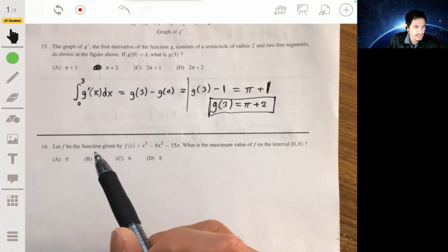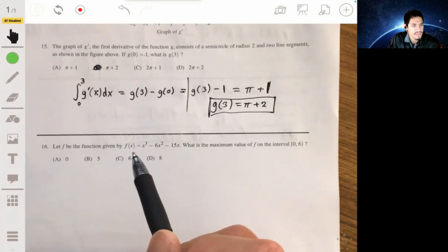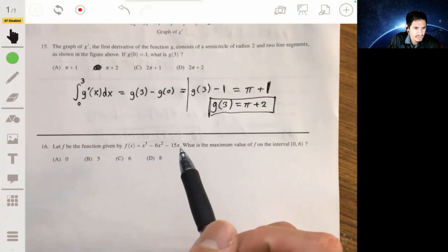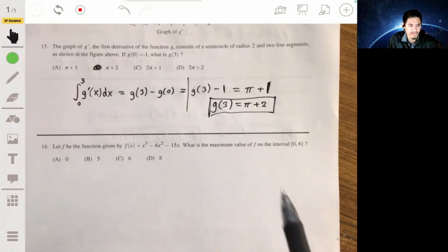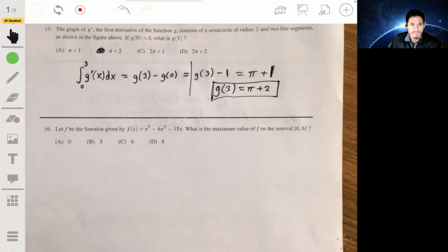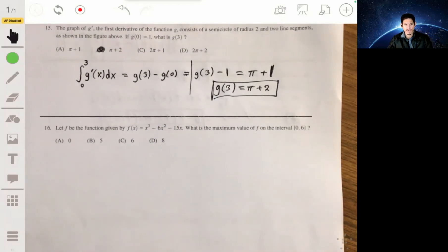Alright, problem 16. If you're given that function f is given by f of x equals x cubed minus 6x squared minus 15x, what's the maximum value on the interval of 0 to 6? One way to go about this is to find the derivative and then find the critical values on this interval, and then evaluate the function at those critical values, because those are where you could have a potential minimum or maximum, and also evaluate the endpoints so you can compare them.